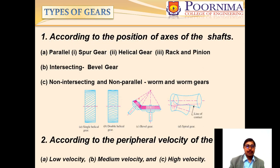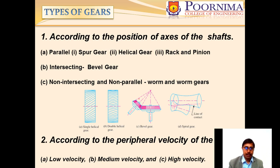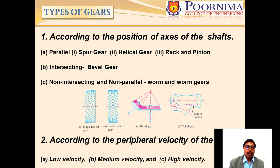There are four methods to classify the types of gears. The first is according to the position of the axis of the shaft. In the parallel category, we have spur gear, helical gear, rack and pinion, and herringbone gear. In the intersecting category, the example is the bevel gear. In the non-intersecting, non-parallel category, we have the worm and worm gear.